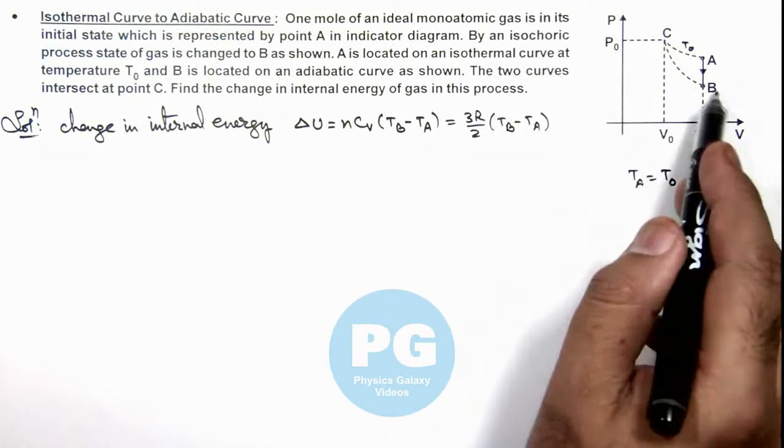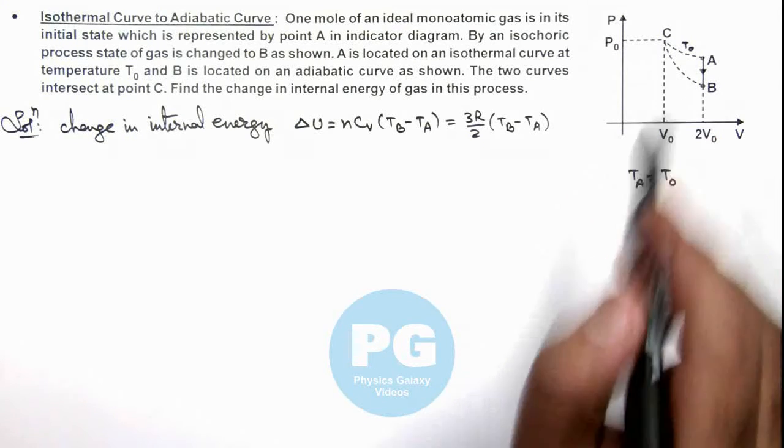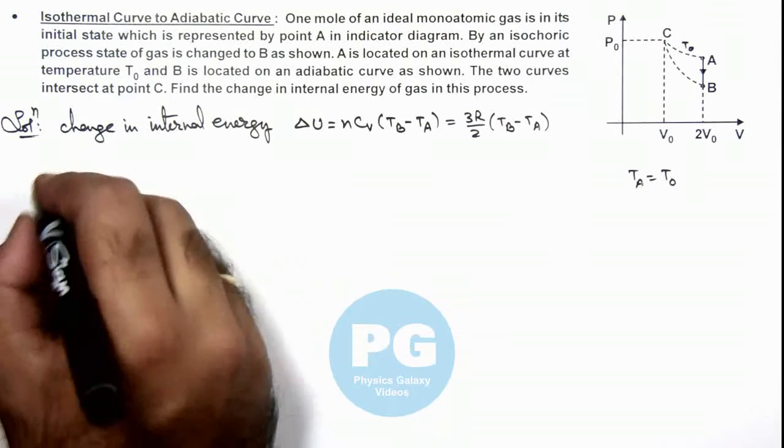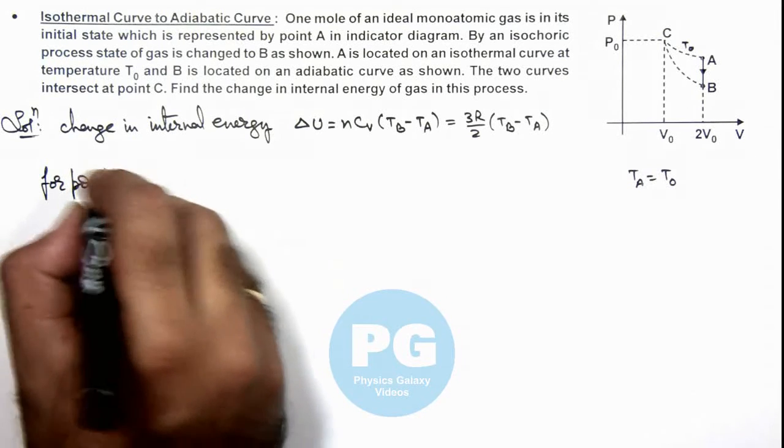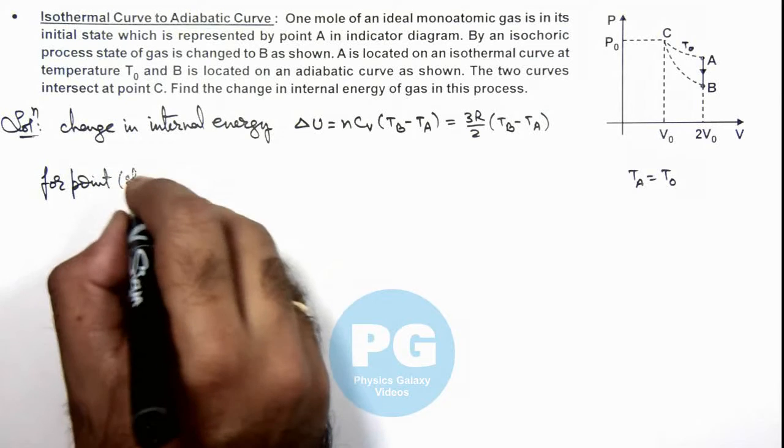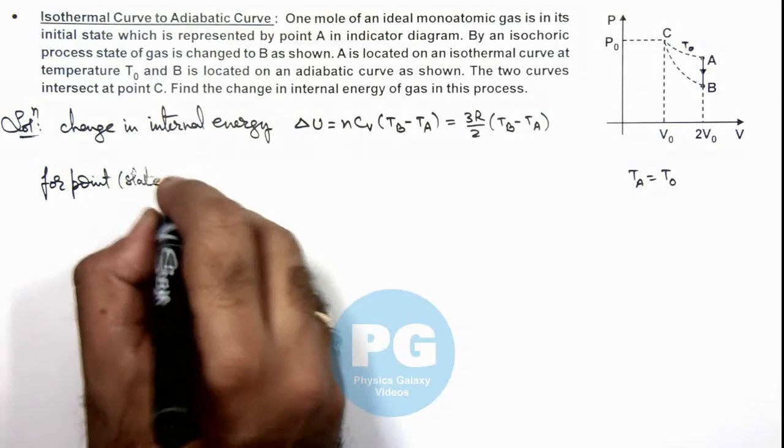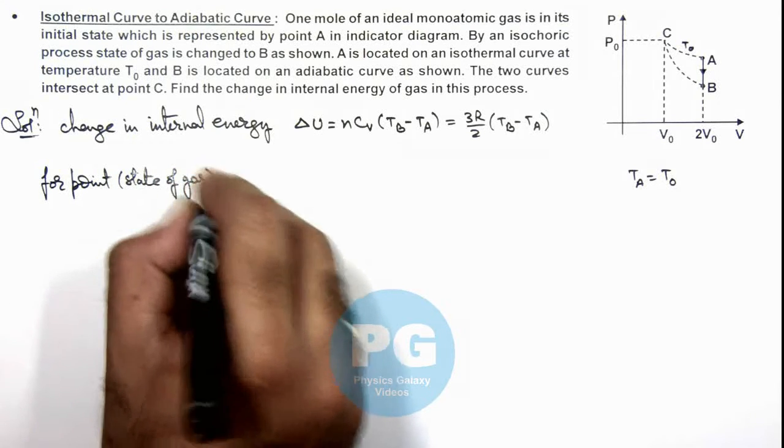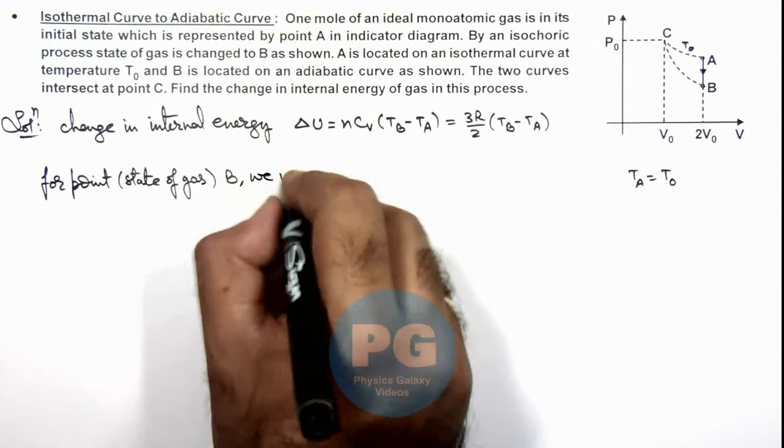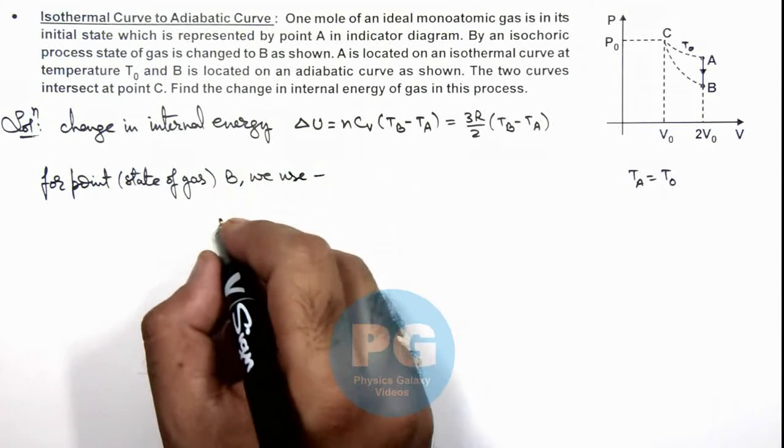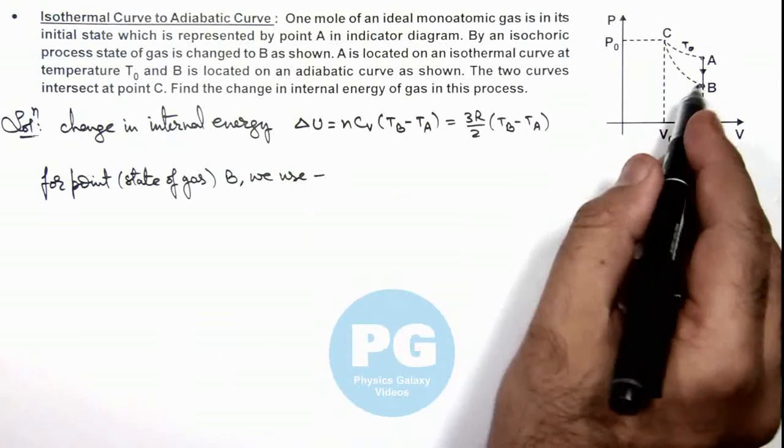So from B to C, there is an adiabatic curve. For points which are representing the state of gas at B, we know for an adiabatic process, the temperature and volume are related as T·V^(γ-1) equals constant.